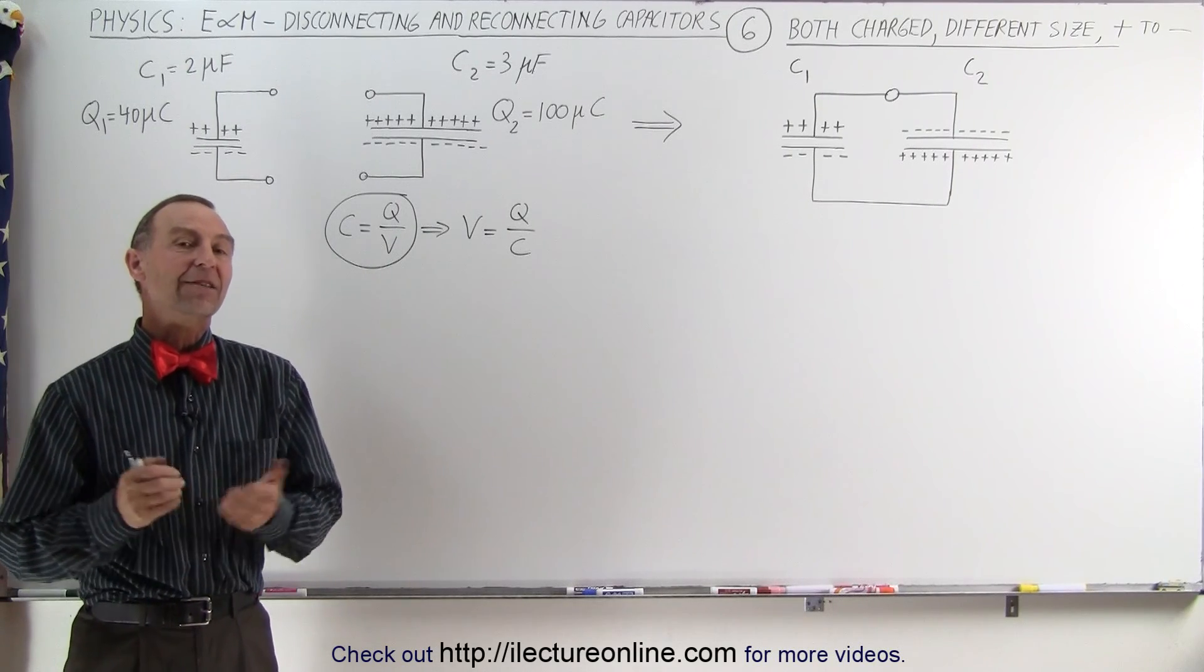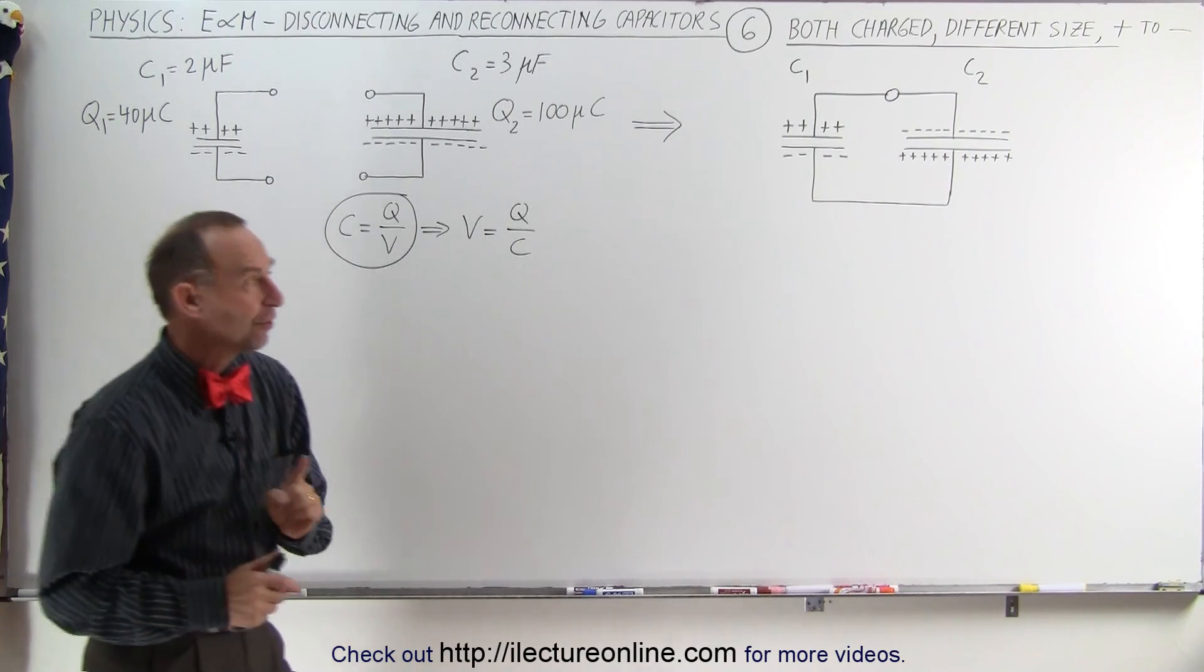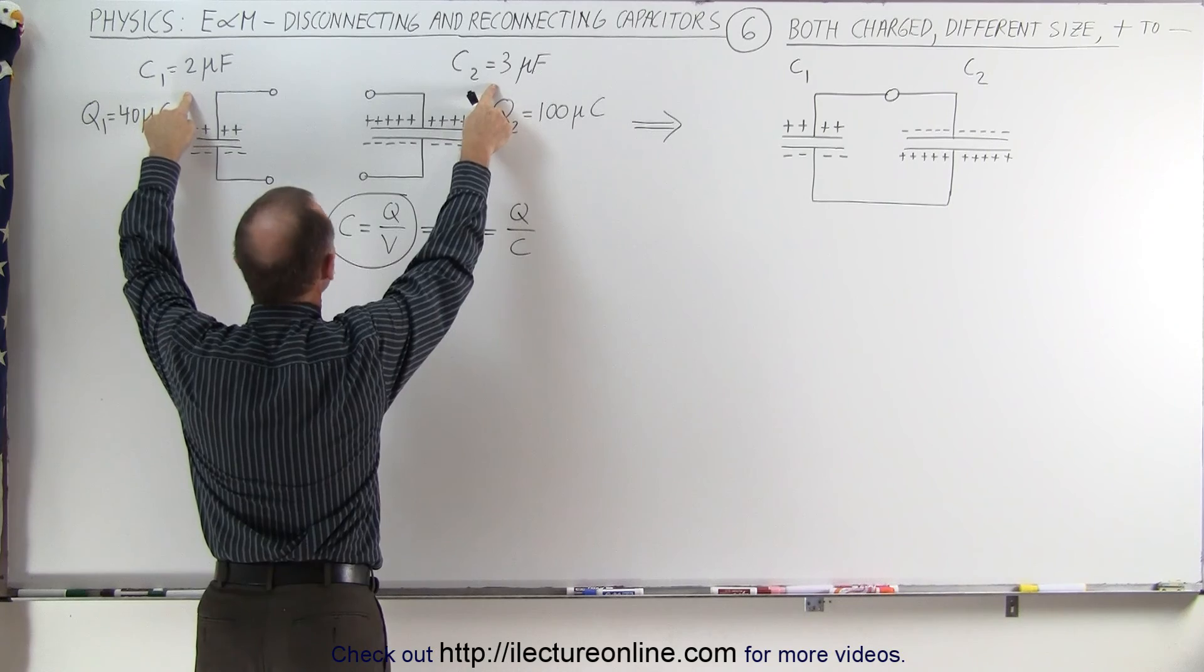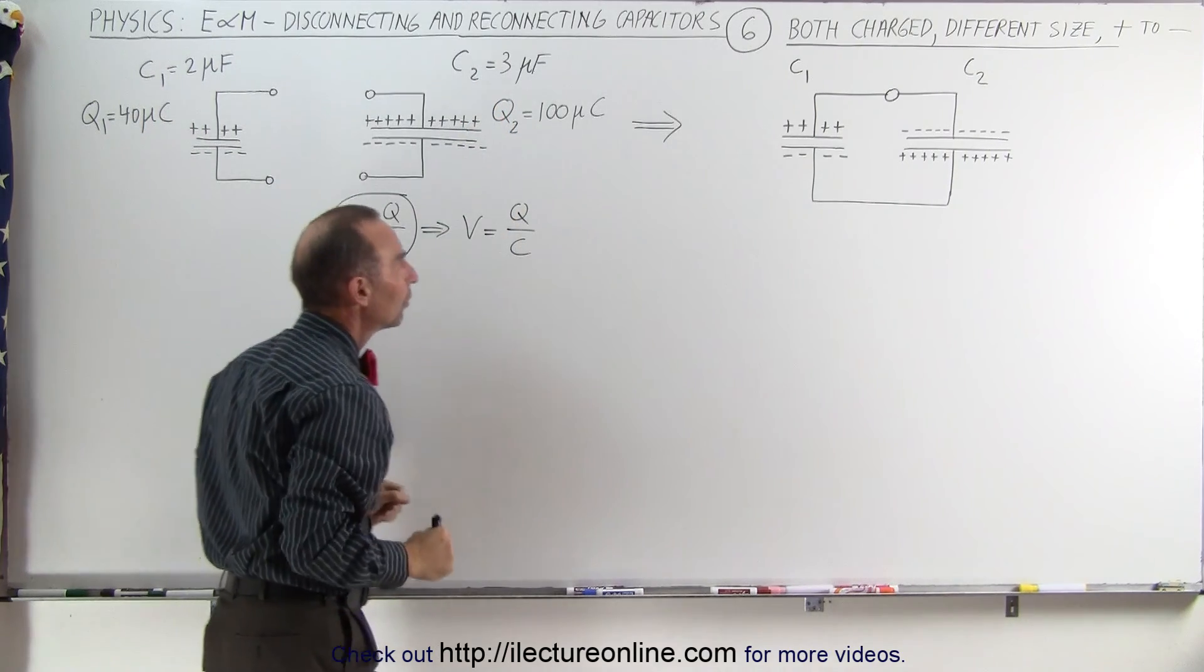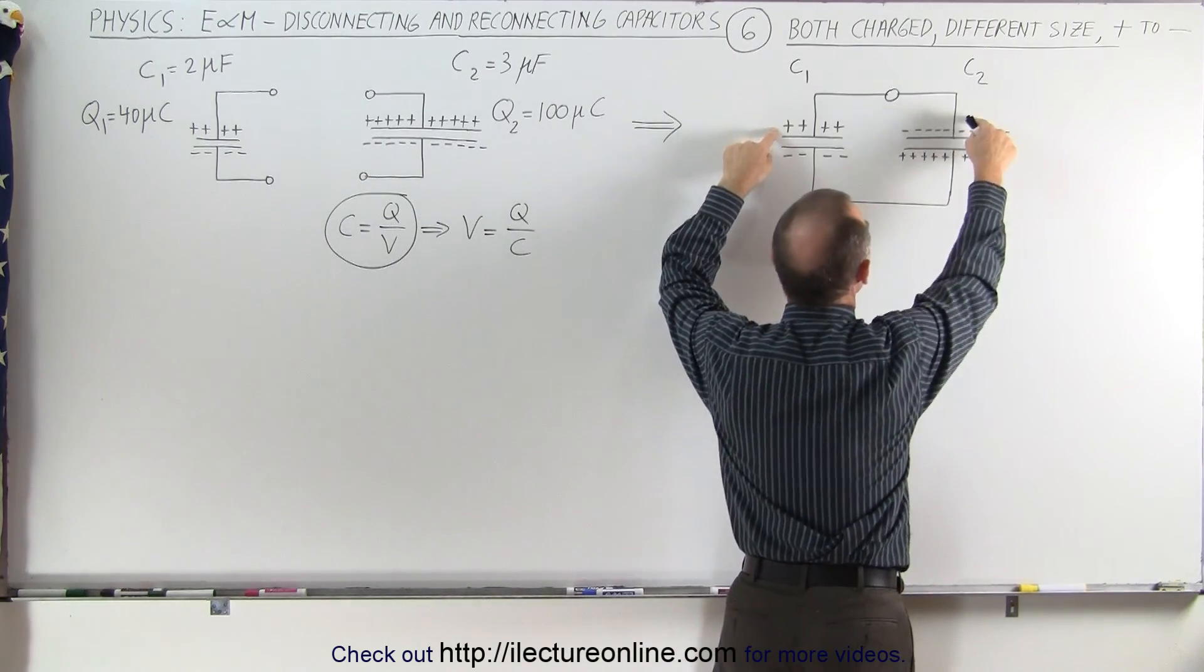Welcome to ElectronLine. Our next example is kind of the same as the previous example with one difference. We have the same capacitors, 2 and 3 microfarads, the same charge on each, 40 and 100 microcoulombs, but in this case we're going to connect them the positive end of one to the negative end of the other.